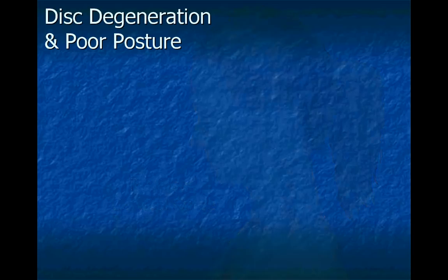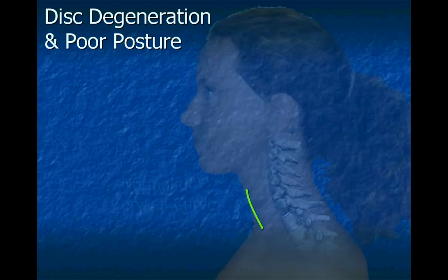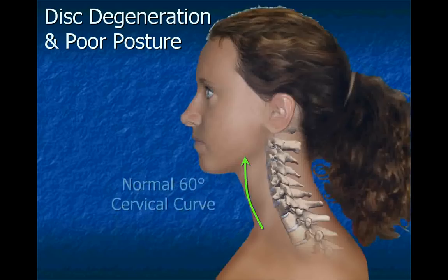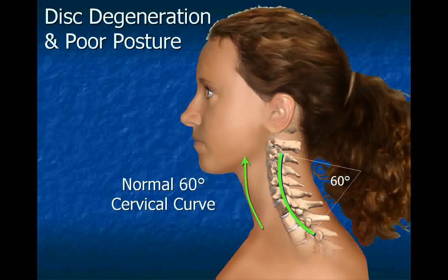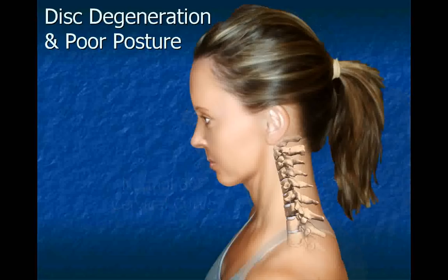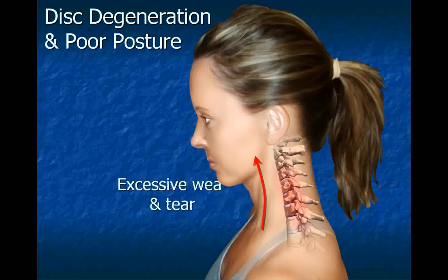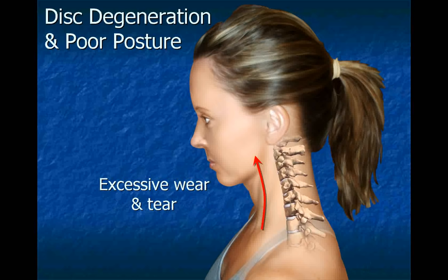The normal cervical spine should have a 60-degree arc in the neck, with the head positioned squarely above the shoulders. If the head juts forward in front of the shoulders, it causes excessive wear and tear on the discs in the neck.